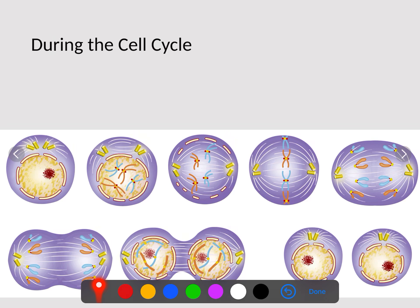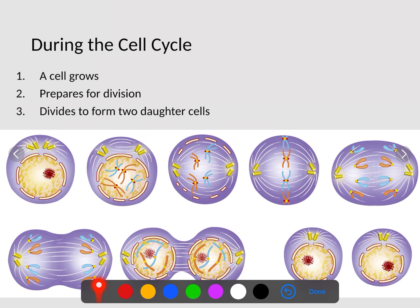During the cell cycle, the cell will first grow — getting big enough and strong enough to split at a later time. The cell also prepares for division by increasing its amount of cytoplasm and replicating its organelles like the mitochondria and endoplasmic reticulum. It will also replicate its DNA so that when it does split, we have two copies. Finally, we divide into two daughter cells. This is the process of mitosis: the nucleus breaks down, chromosomes form, line up in the middle, migrate to either side, and two new daughter cells form with an identical number of chromosomes.